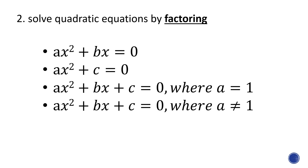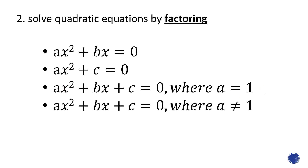So let me just discuss this to you first. The first form is where the leading term and the second term, or the term with x, are given. The second possibility or form is if the leading term and the constant number are given. The third one is if we have a quadratic trinomial but the leading term equals one. And last but not the least, we have a quadratic trinomial wherein a is not equal to one. So let me give you now and discuss those examples for these forms of quadratic equations.